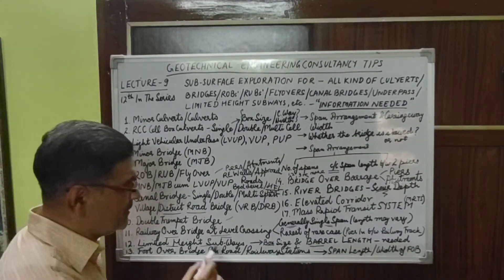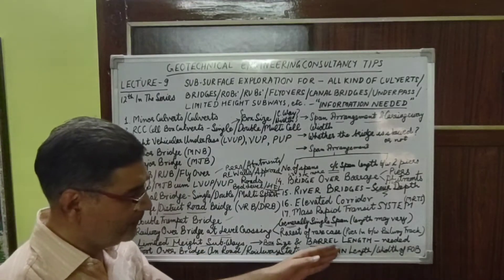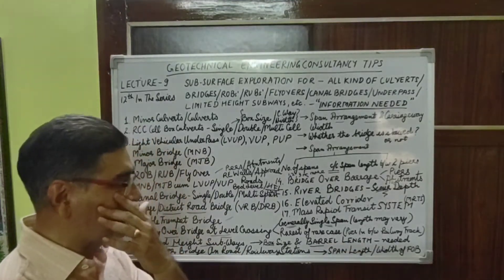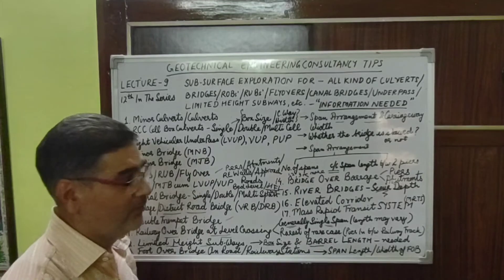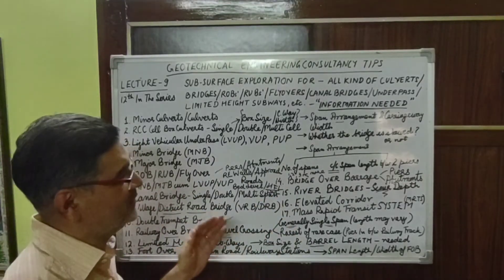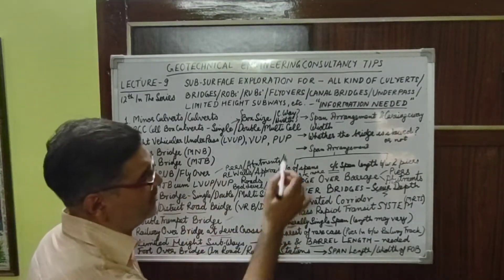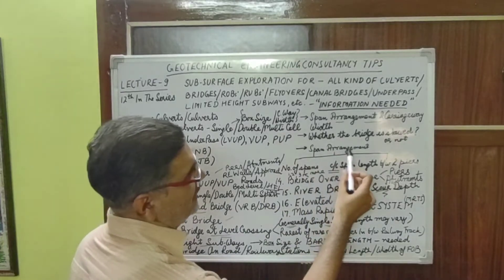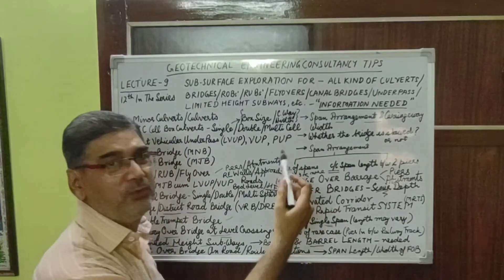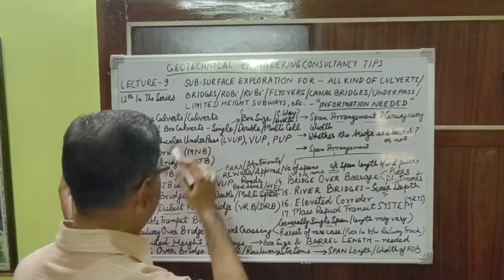Foot overbridges on roads and railways are also built. For these we need to look into the span length and the width of the foot overbridge. What I have discussed in this lecture is all about deciding the number and depth of boreholes to be explored, based on data that must necessarily be collected prior to moving to a particular site for soil investigation.